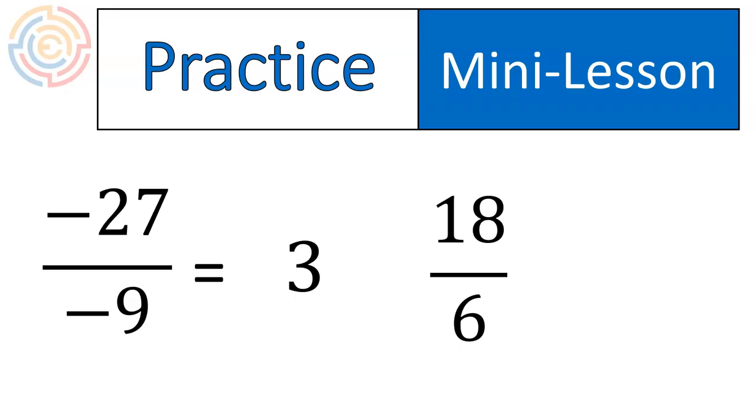And 18 divided by 6. 18 divided by 6 should give us... a positive. That's a positive divided by a positive, which gives us a positive.